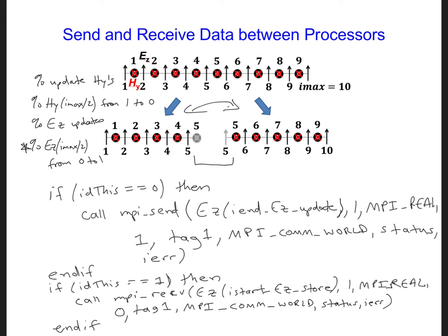So what we've done here is implement a blocking send, meaning the receiving processor has to receive the data before the sending processor will continue reading through the code. It is possible to implement a non-blocking send and receive call here, which will have the code run about 4% faster. But we're not going to worry about that right now for our small one-dimensional code.